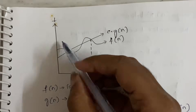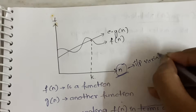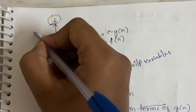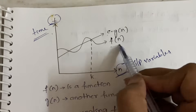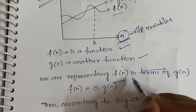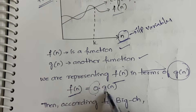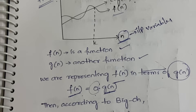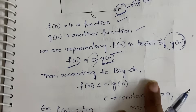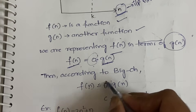On the graph, we take n on the x-axis — n means the number of input variables — and T on the y-axis, where T means time. We have two functions: f(n) and g(n). You are representing f(n) in terms of g(n), that is, in terms of order of g(n). The general form changes from notation to notation.